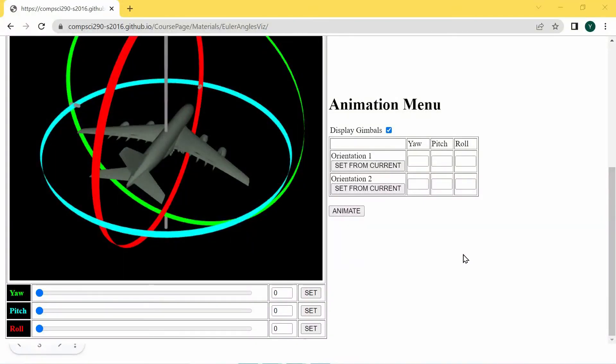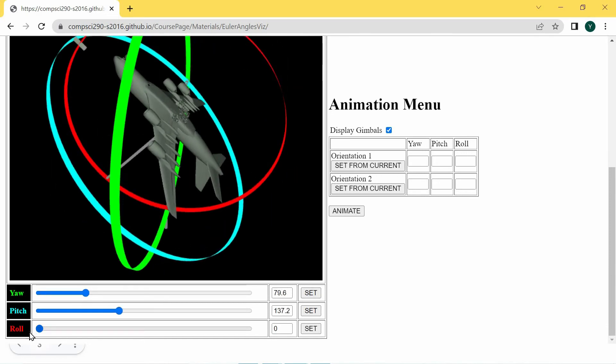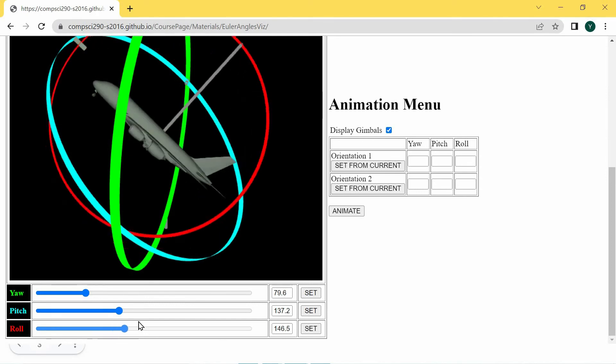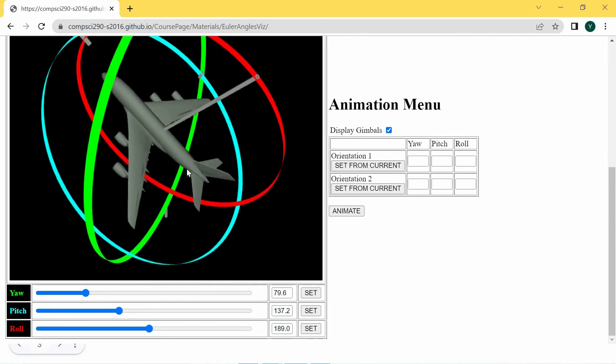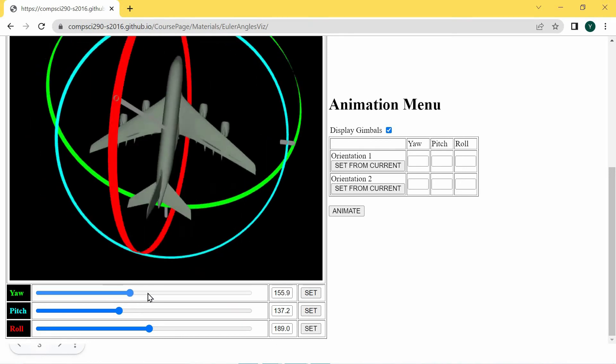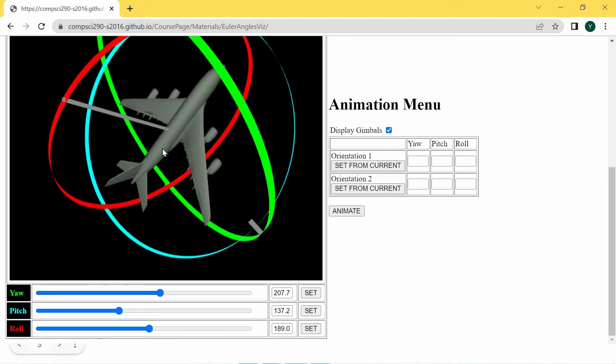Also, I found worthwhile to show this online tool where we have this virtual plane, and we can tune yaw, pitch and roll angles. And it will show the orientation of the plane. So by tuning yaw, pitch and roll angles, we can set any orientation to this plane.